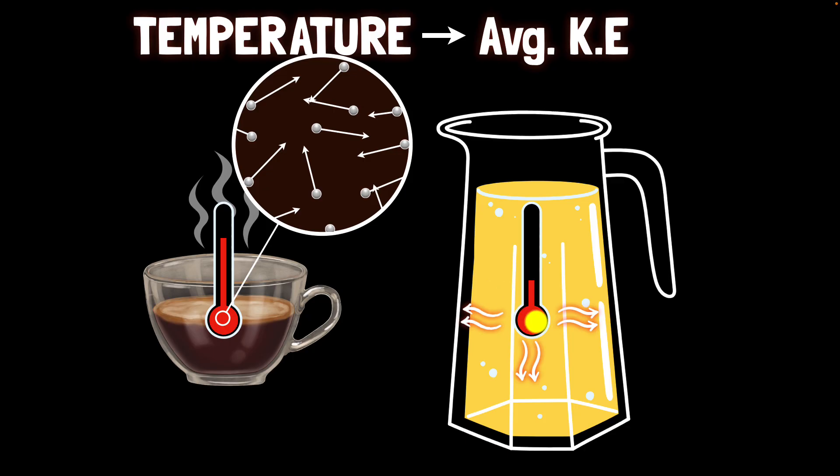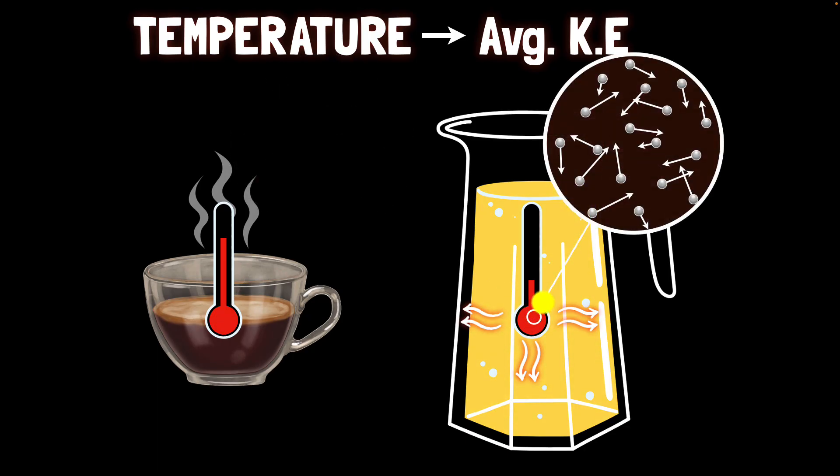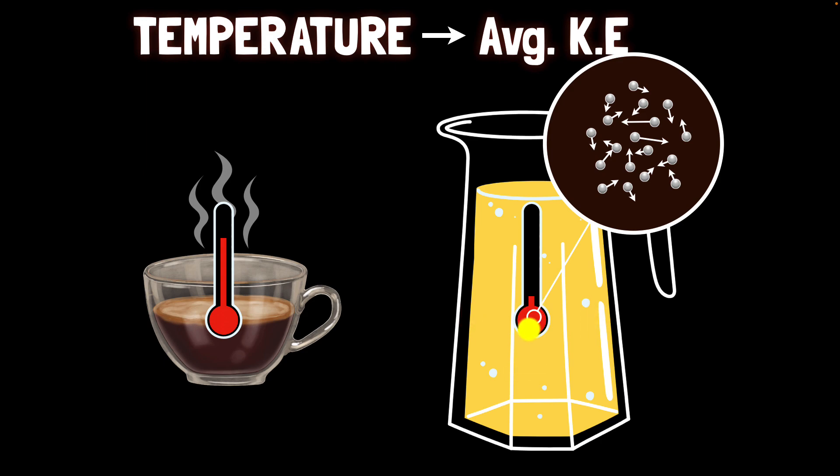And what happens over here well here because the thermometer is getting colder its temperature is dropping the average kinetic energy is getting lower particles are moving slower and so the exact opposite they come closer to each other so the whole thing contracts and therefore the level drops. Again this happens until it reaches the same temperature as that of the lemonade.